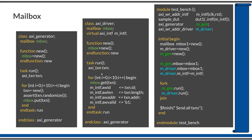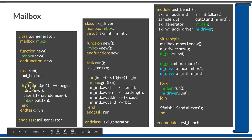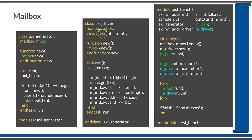The axi_driver also has a task named run which receives transactions and drives them into the interface. In a for loop repeated 10 times, mbox.get() is called — this blocks until a transaction is available in the mailbox. After getting the transaction, it is driven to the interface appropriately. This class will receive all 10 transactions that the generator puts into the mailbox and drive them to the interface.